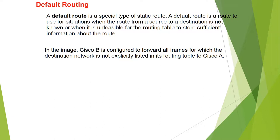A default route is a special type of static route. A default route is a route to use for situations when the route from a source to a destination is not known, or when it is unfeasible for the routing table to store sufficient information about the route. For example, Cisco B is configured to forward all frames for which a destination network is not specifically listed in its routing table to Cisco A.